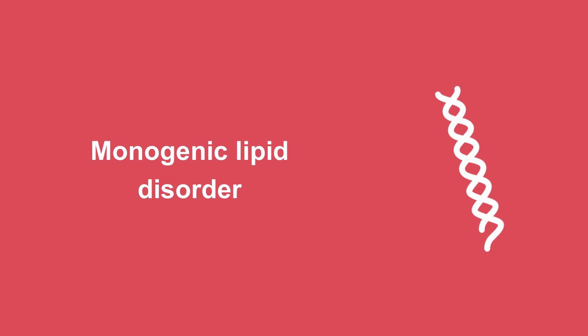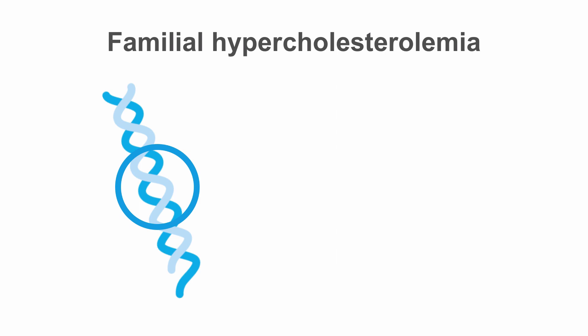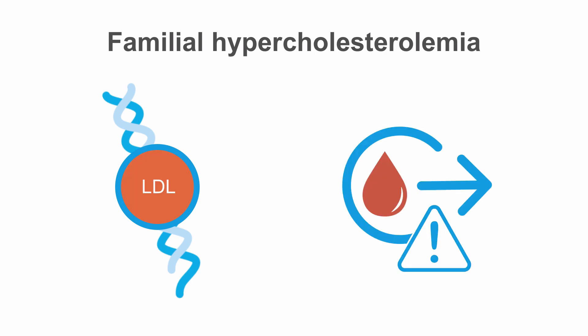Let's look first at monogenic lipid disorders. The most prevalent monogenic lipid disorder is familial hypercholesterolemia, which is very common in its heterozygous form and affects about 1 in 200 to 300 individuals in Europe and the US. The functional mutation lies within one of several genes involved in LDL metabolism and affects the removal of LDL from the blood.